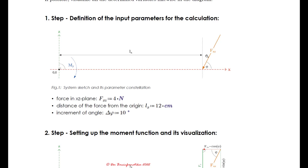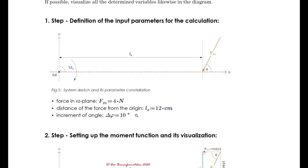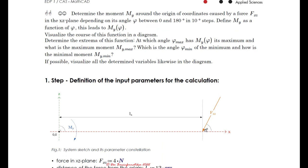The magnitude of this force is one parameter. The lever — or the distance of this force to the origin — is another parameter. And the inclination step: we will change the angle phi between 0 and 180 degrees in 10 degree steps.